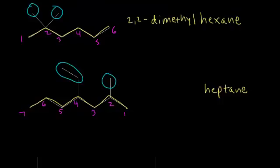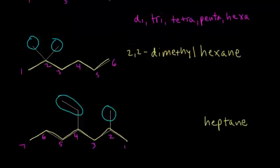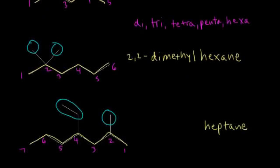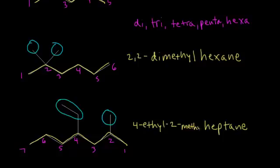Which substituent comes first — the ethyl group or the methyl group? Step four says to arrange them alphabetically. E comes before M, so ethyl goes before methyl. That gives us 4-ethyl-2-methylheptane as the official IUPAC name for this molecule.